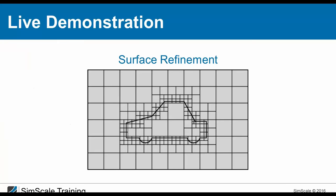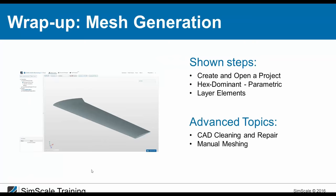Meshing is finished — let's do a quick wrap-up. We covered how to open a project, import geometries, hex-dominant meshing (parametric), the theory behind meshing, how SnappyHexMesh works, and the importance of layer elements for resolving high-velocity gradients near walls. We didn't cover CAD cleaning and repair (making geometry watertight) or all manual meshing settings in depth — but you'll gain additional understanding when doing this yourself as homework with the provided tutorial.